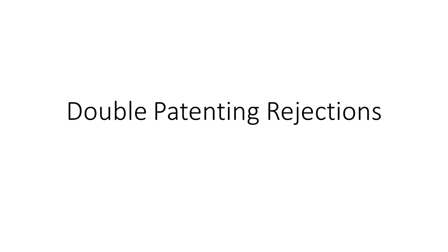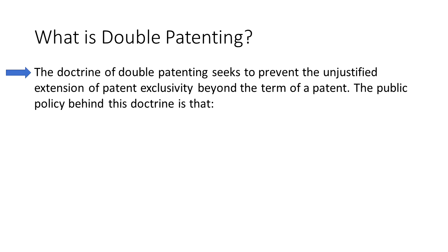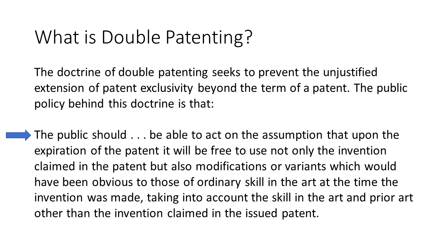Hello and welcome to another edition of Inventor's Quick Tips. Today we are discussing the topic of double patenting — when it may apply and what can be done to overcome it. First, what is it? This is easiest to explain by starting with why it exists. As per the U.S. Patent and Trademark Office, the doctrine of double patenting seeks to prevent the unjustified extension of patent exclusivity beyond the term of a patent.